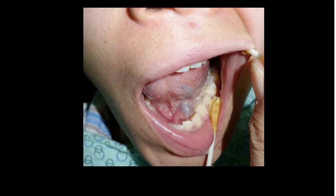A ranula describes a blue translucent swelling in the floor of the mouth. They're usually fluctuant and lateral to the midline. In this photo you can see the ranula here and the midline here, and you can see that it's lateral to that midline.